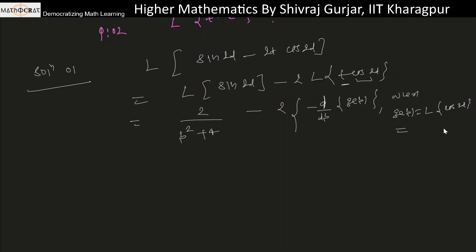Laplace of cos(2t) is p divided by (p²+4). So the result is: 2/(p²+4) plus 2 times minus d/dp of [p/(p²+4)].